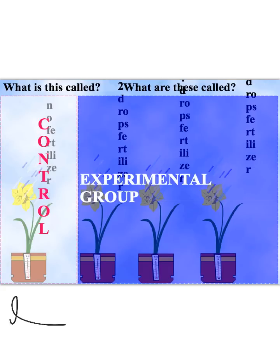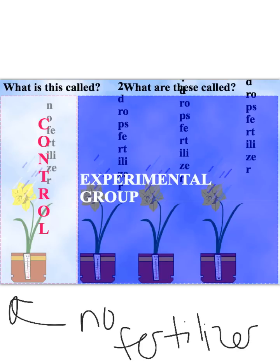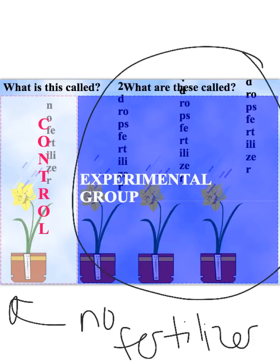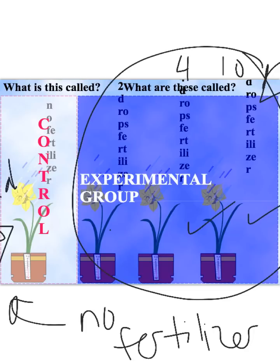Over here we have our control group — it had no fertilizer, so we can see how a plant grows on its own without any fertilizer. All of those receiving fertilizer, no matter the amount — two drops, four drops, or ten drops — are part of the experimental groups. They're getting that independent variable. So now I know how tall it normally would grow, and I can compare the three experimental plants to the control to see if the fertilizer really made a difference. That's what we're trying to see: does our independent variable really make an impact?